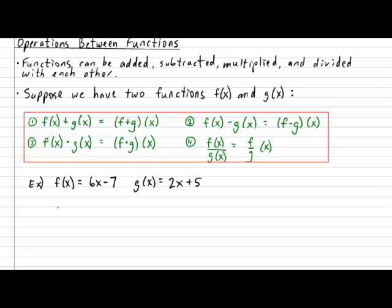Let's take a look at each of the four operations one by one. Let's start with addition. So suppose I ask you, what is the rule for f plus g of x? Well, it's easy. Add the two functions together. So we have 6x minus 7 plus 2x plus 5. And that gives us 8x minus 2.